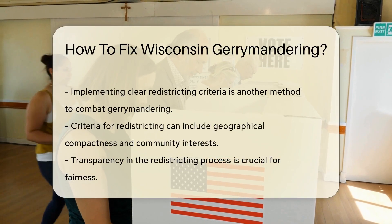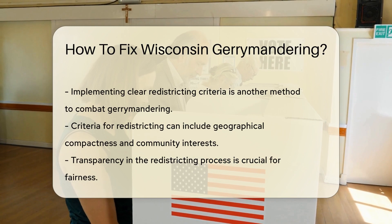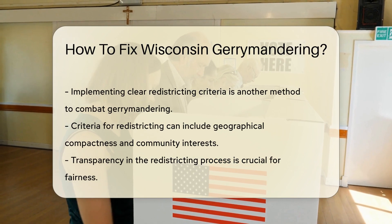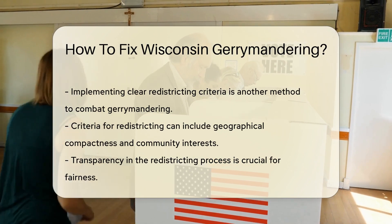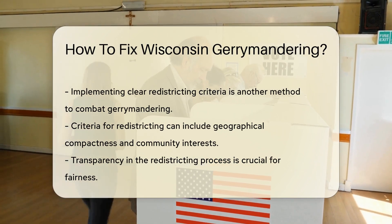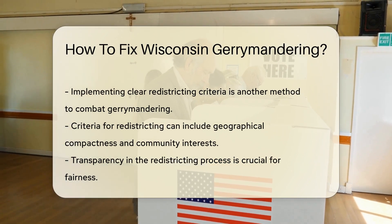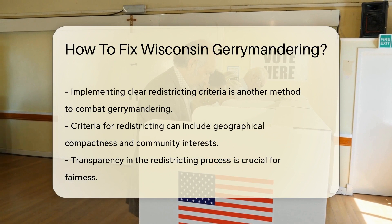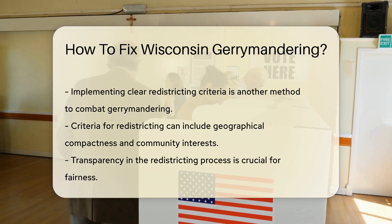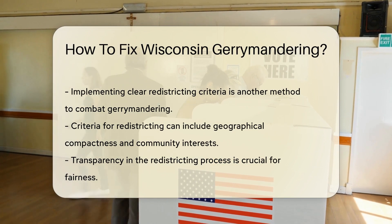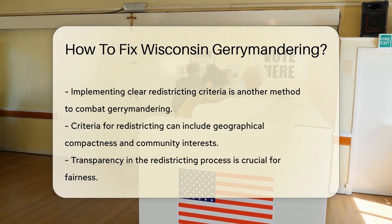Another method is to implement clear criteria for redistricting. These criteria can include considerations like geographical compactness, community interests, and adherence to natural boundaries.